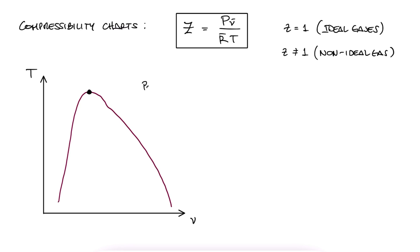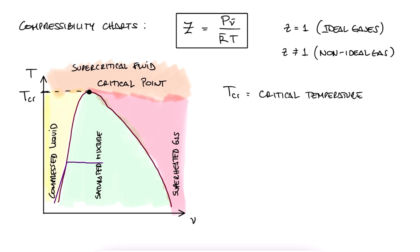Remember what we called the highest point of the dome in a TV diagram, and what it meant? We said that that peak was called the critical point, and that anything above it would be a supercritical fluid. We didn't say much more beyond that, but the values for both temperature and pressure at the critical point is what we call the critical temperature and the critical pressure.